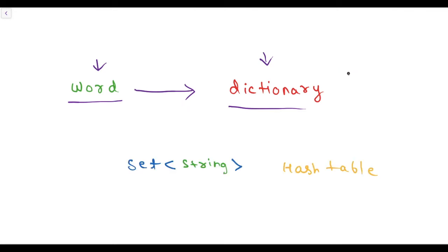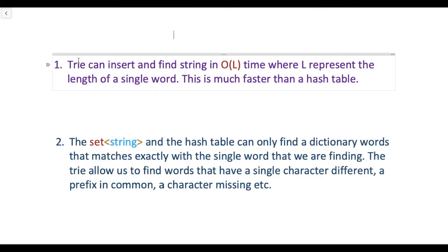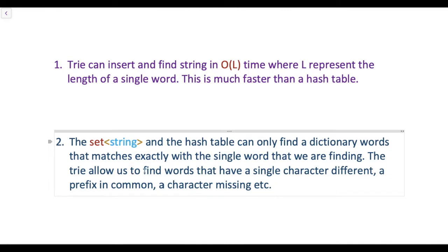But you may ask yourself why use trie if set string and hash table can do the same. There are two main reasons. First, trie can insert and find the string in O(L) time, where L represents the length of a single word that we are inserting. This is much faster than a hash table. The second reason is that set string and hash table can only find a dictionary word that matches exactly with the word we are finding. The trie allows us to find words that have a single character different, a prefix in common, a character missing, etc.